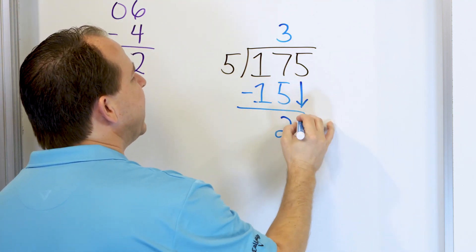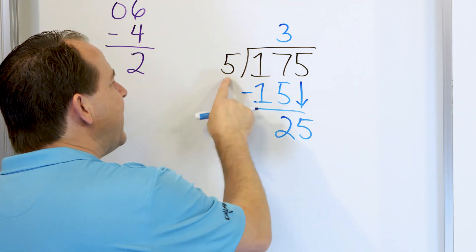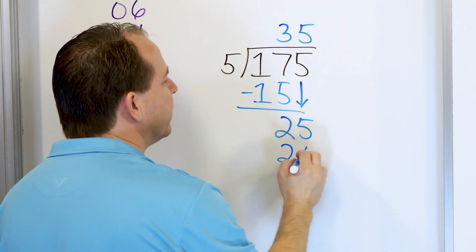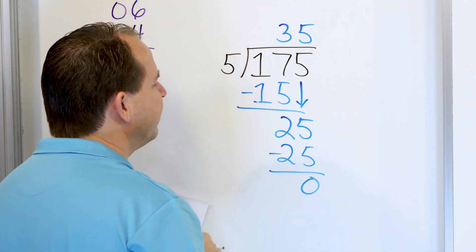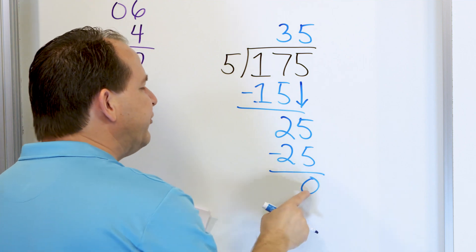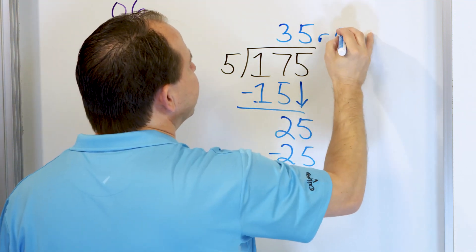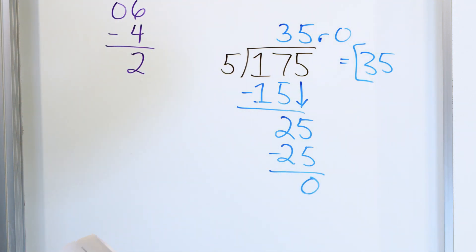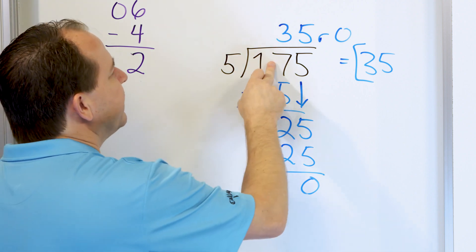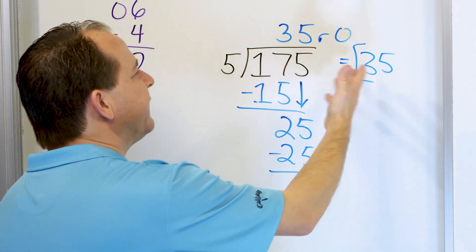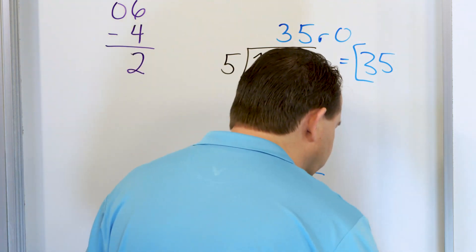After I subtract, I grab the next digit and bring it down. I have 25. 5 times something is 25 — what fits is 5 times 5 is 25. So I multiply and subtract: 25 minus 25 is 0. I try to grab the next digit but there's nothing there. 0 is less than 5, so the remainder is 0 and the answer is 35. If I have 175 basketballs for 5 teams, every team gets 35 basketballs with nothing left over.